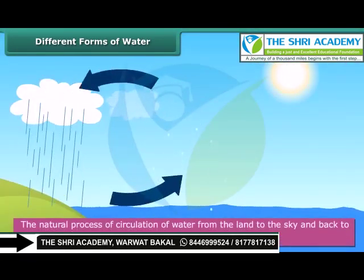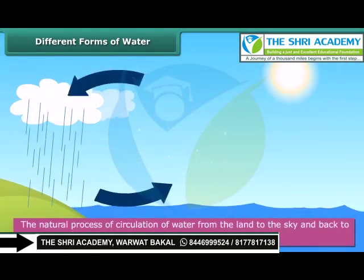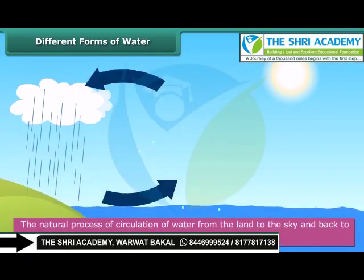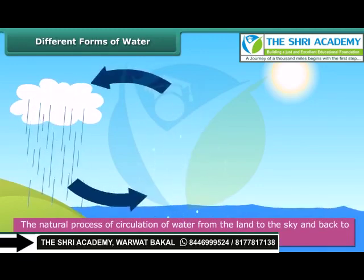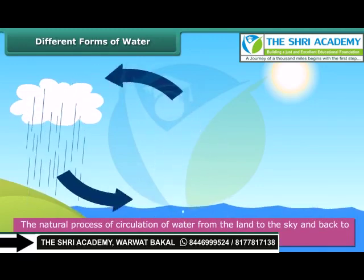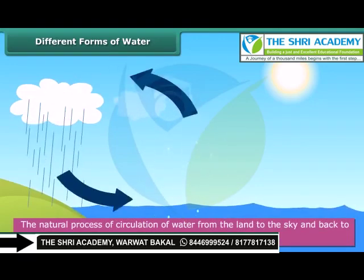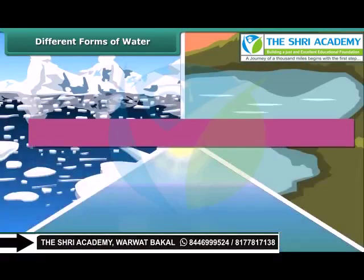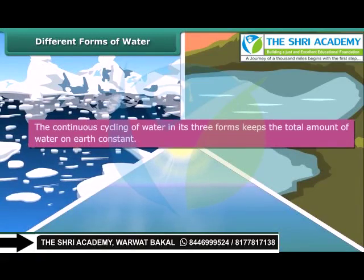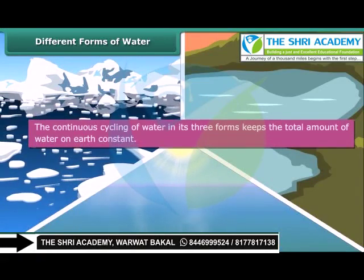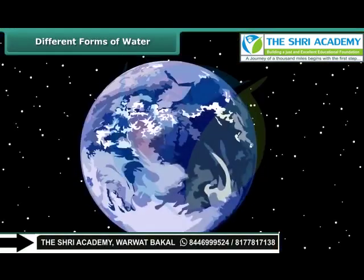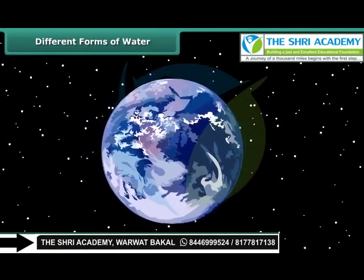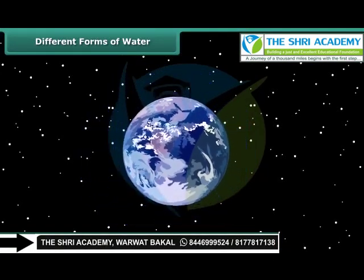The natural process of circulation of water from the land to the sky and back to the land again is called the water cycle. The continuous cycling of water in its three forms keeps the total amount of water on earth constant, even when the whole world is using it.